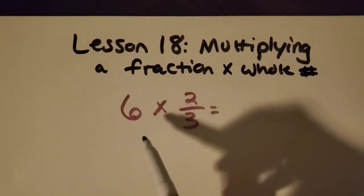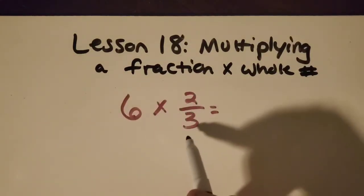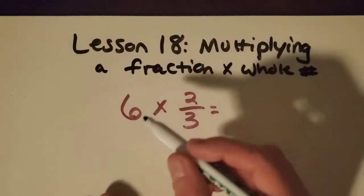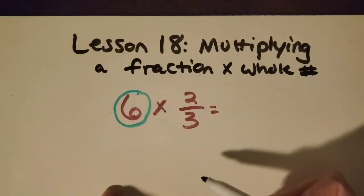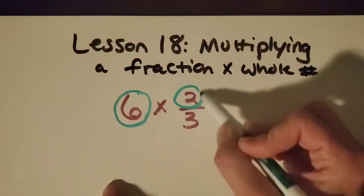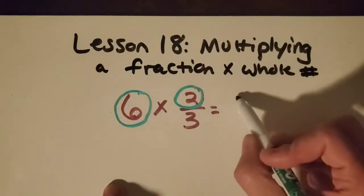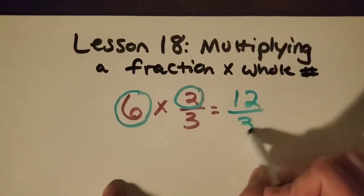Okay, so here's a little bit more complicated of an example. We've got six groups of two-thirds. So I'm going to try that strategy that is a little quicker than drawing a picture for this one.